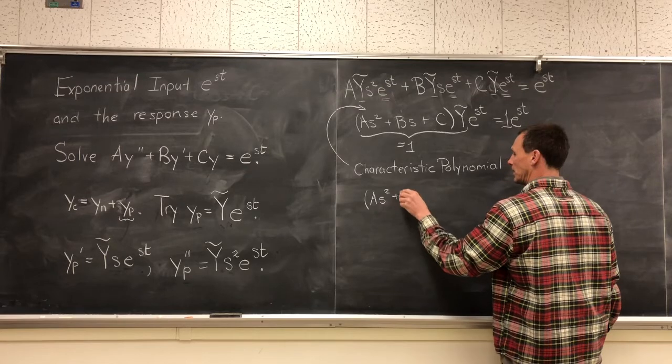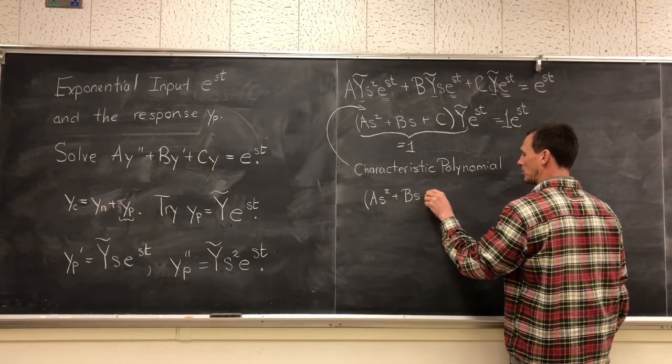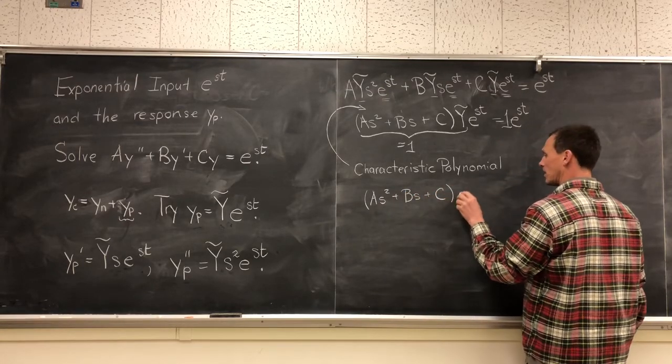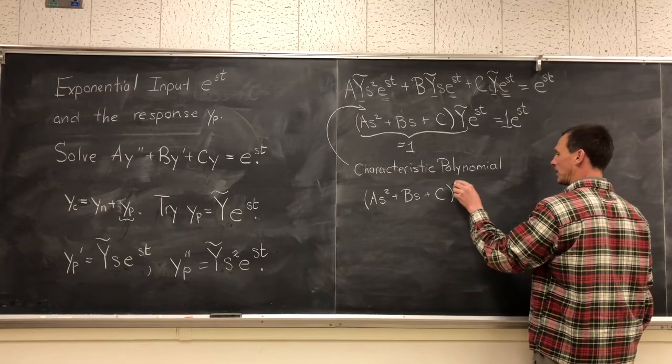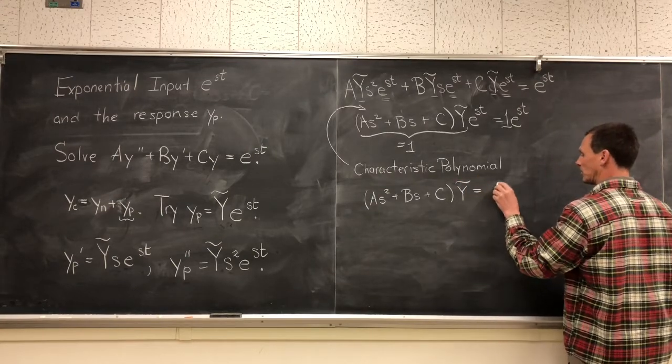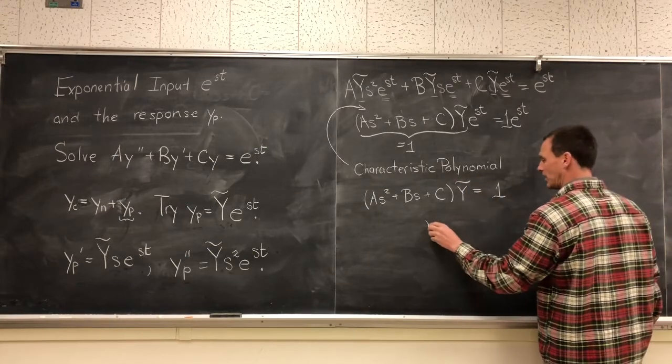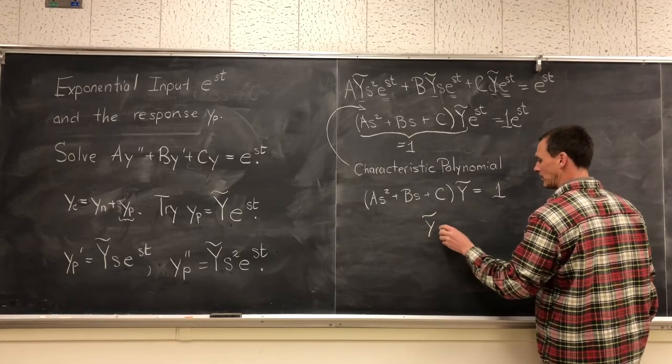So let's solve what we have. I have now (a s squared + b times s + c) times capital Y tilde equals one, and so now we can solve our problem as Y tilde equals one over (a s squared + b times s + c).